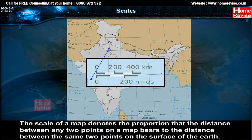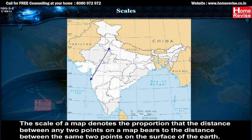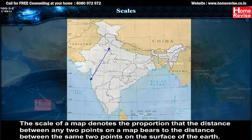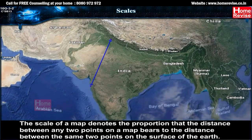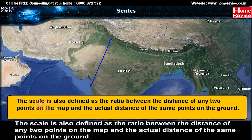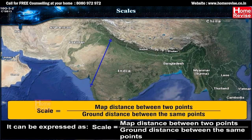The scale of a map denotes the proportion that the distance between any two points on a map bears to the distance between the same two points on the surface of the earth. The scale is also defined as the ratio between the distance of any two points on the map and the actual distance of the same points on the ground. It can be expressed as: Scale = Map distance between two points divided by ground distance between the same points.